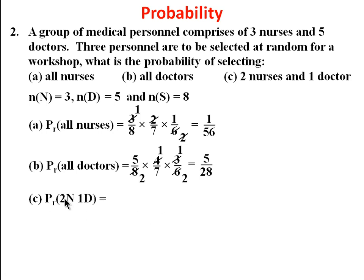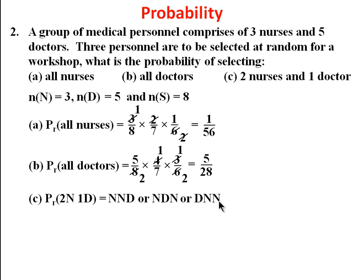The probability of getting two nurses and one doctor involves different possible arrangements: nurse-nurse-doctor, or nurse-doctor-nurse, or doctor-nurse-nurse. Since the numerators just interchange and the denominators are the same in each case, we can find the probability of one arrangement (NND) and multiply by three, since the three cases are added together.